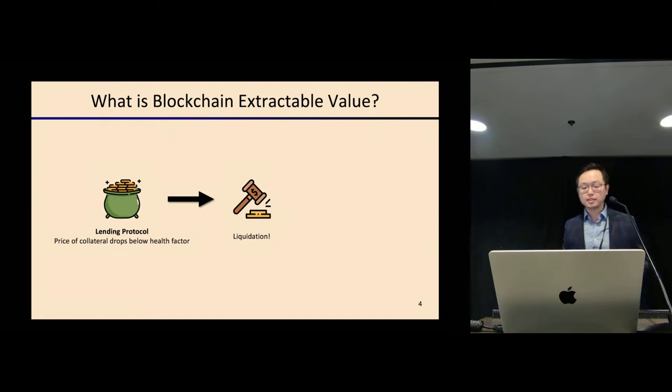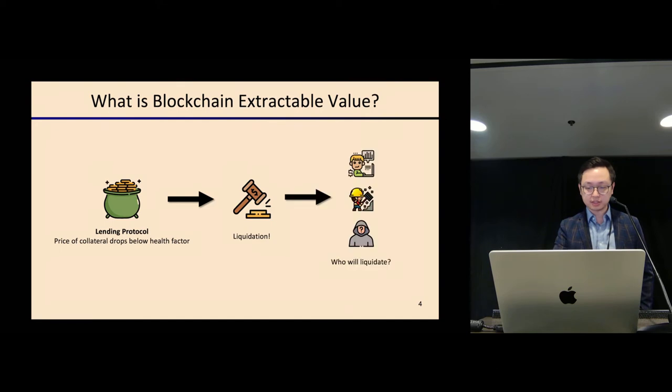In traditional finance, who triggers the liquidation is rather certain. Taking home mortgage as an example, typically it's the bank who will be selling your property to pay the debt. However, in DeFi, it's very tricky who will be liquidating the position. It can really be anyone. Anyone means it can be a trader sitting in front of a browser triggering the liquidation manually, a bot which listens to all types of transactions on the network layer and triggers liquidation automatically upon detection of a profitable opportunity, or a miner who packages the liquidation into the next block they mine.